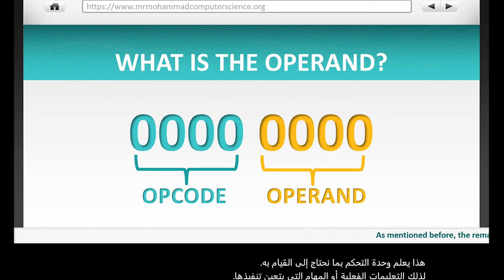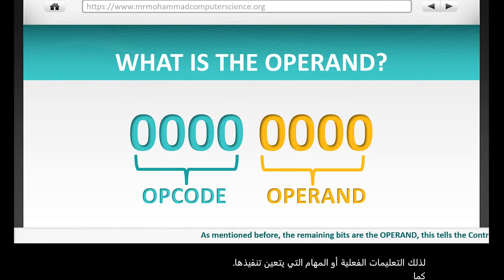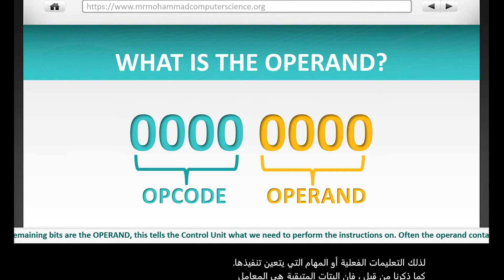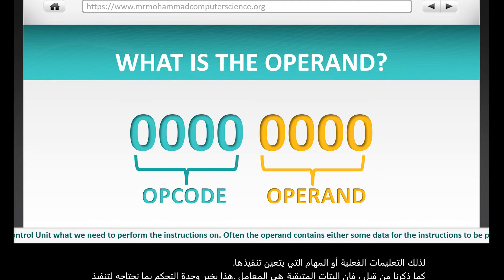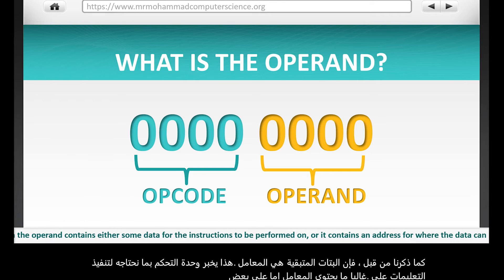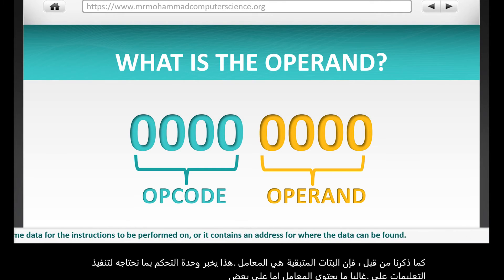The remaining bits are the operand. This tells the control unit what we need to perform the instructions on. Often the operand contains either some data for the instructions to be performed on, or it contains an address for where the data can be found.